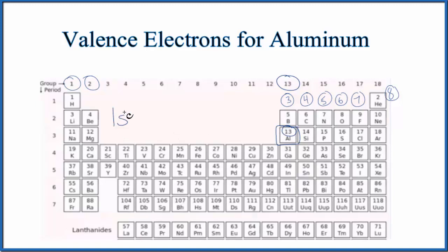So we have 1s2, that energy level is full. 2s2, 2p6, second energy level is full. 3s2, we've used 12, we have 13. So 3p1.